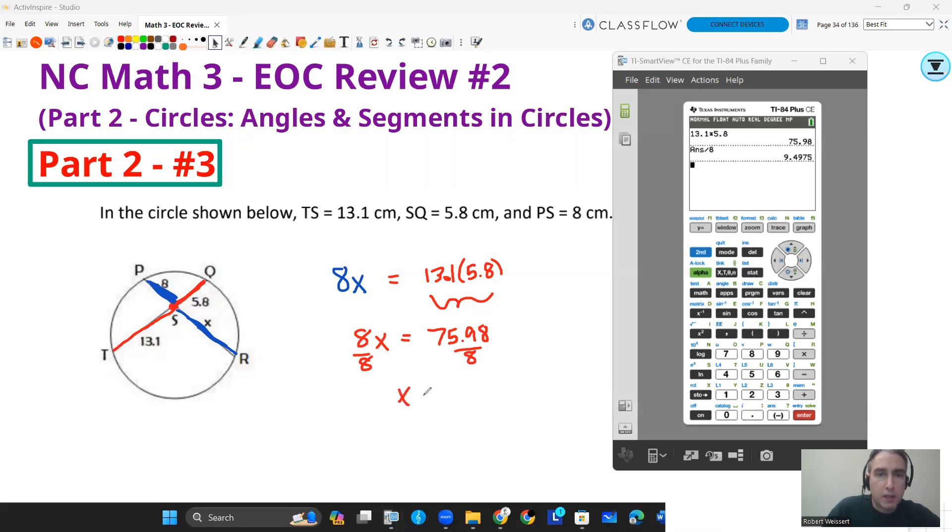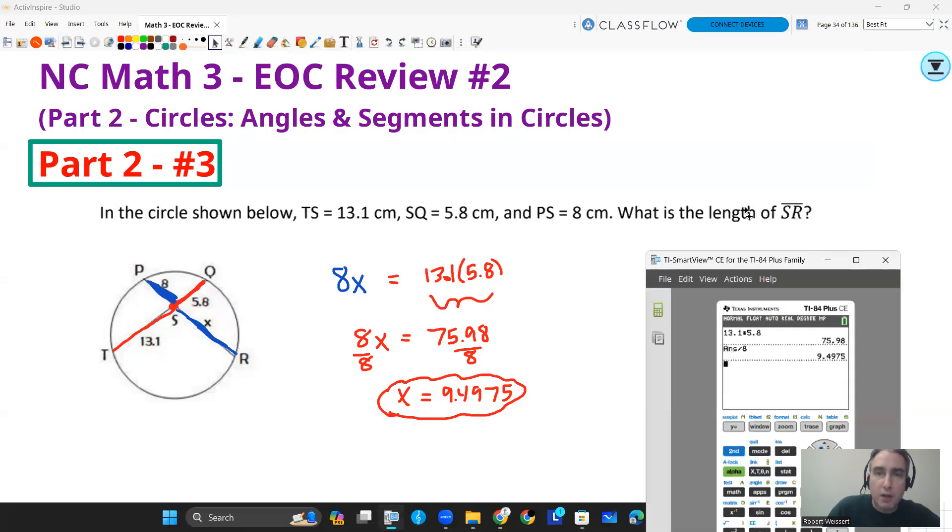From there, I can just divide that 8 out to solve for X, and I'll get 9.4975. So X is 9.4975, or you could round to about 9.5 if you'd like to. And that's all this question wants to know. X is what the question is asking for because the question is asking for SR, and SR is X in this case.